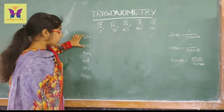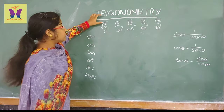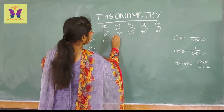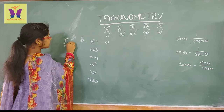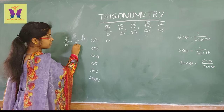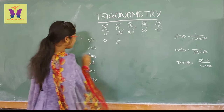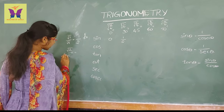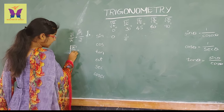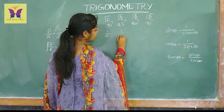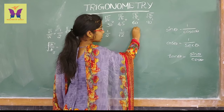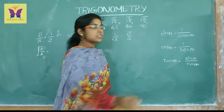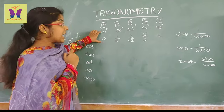You want to write these values as sin or cos. For sin: root 0 by 4 equals 0. Root 1 by 4 — root 1 is 1 and root 4 is 2, so the answer is 1 by 2. Root 2 by 4 — root 4 is 2, so the answer is 1 by root 2. Root 3 by 4 — the answer is root 3 by 2. Root 4 by 4 — root 4 is 2, so the answer is 1.